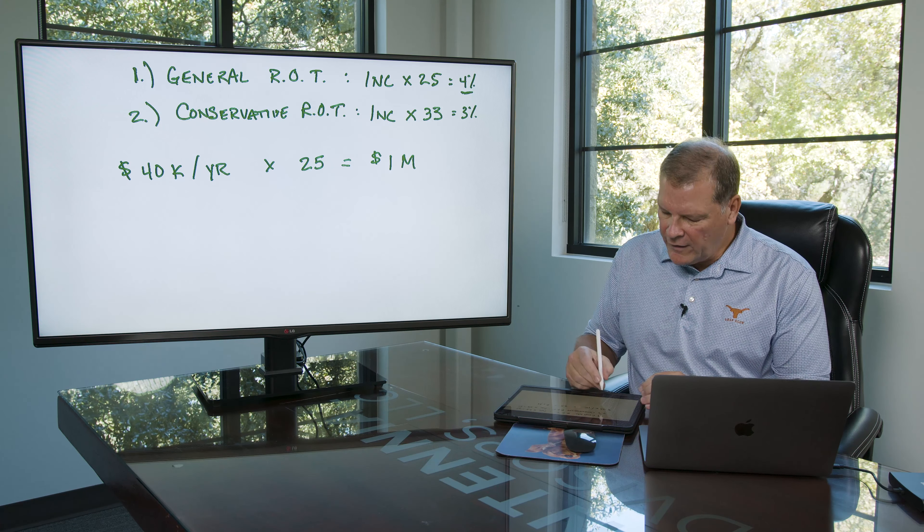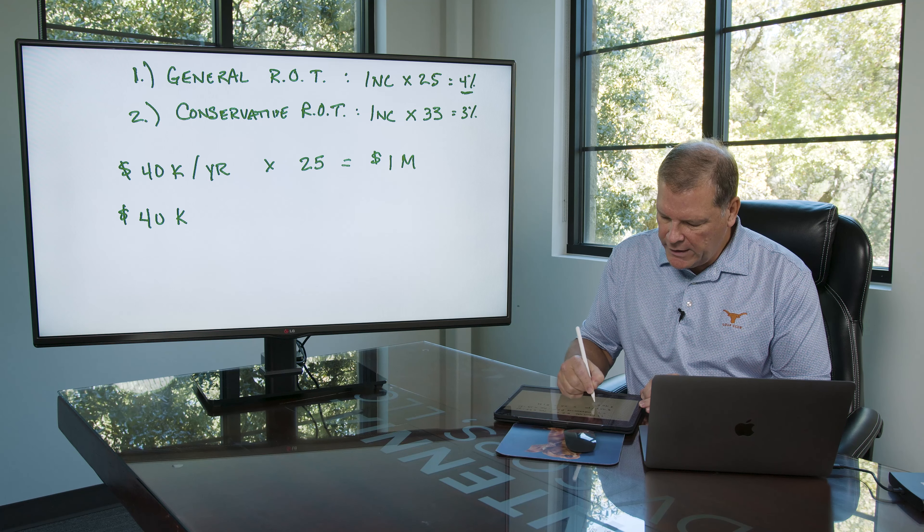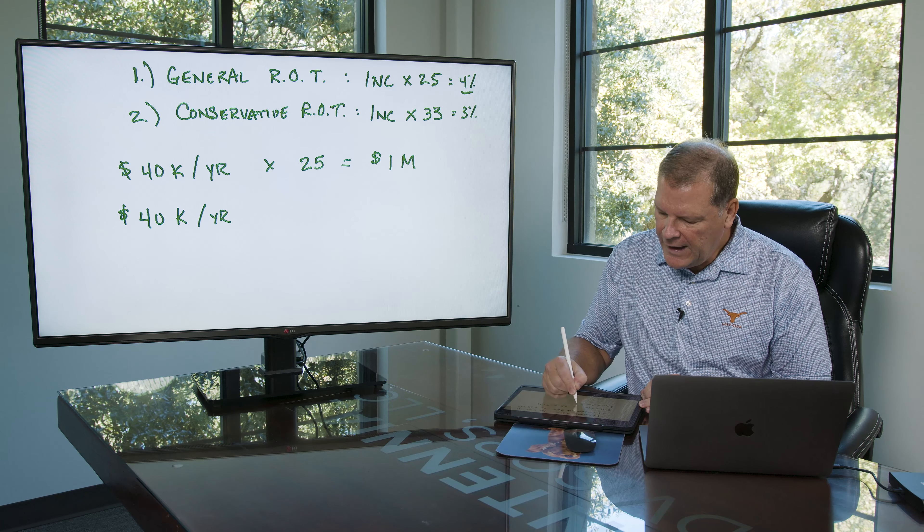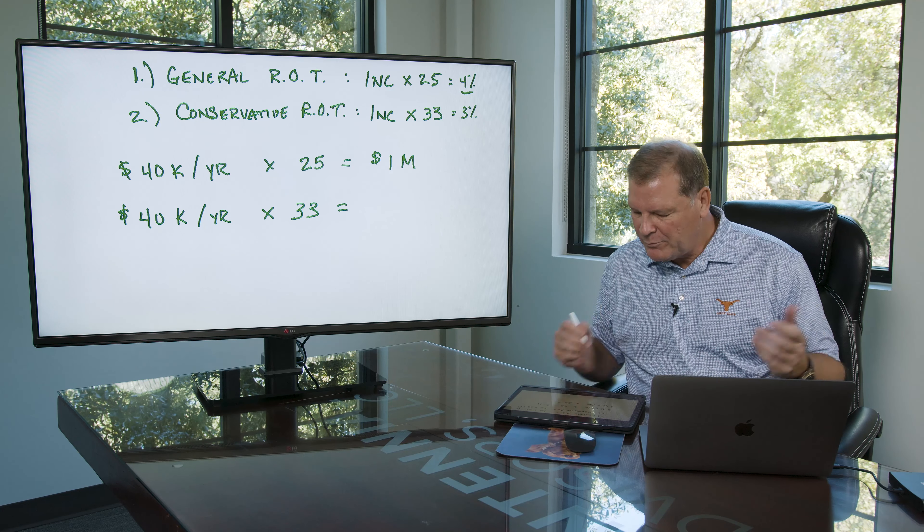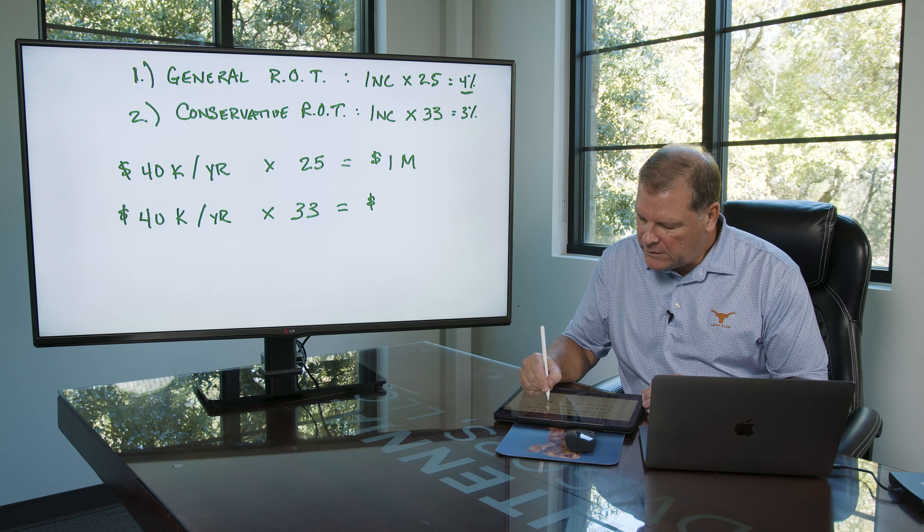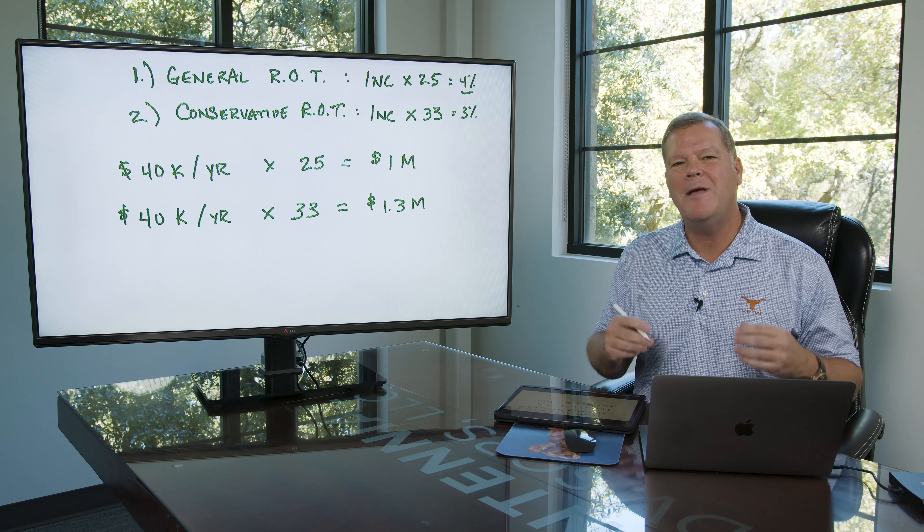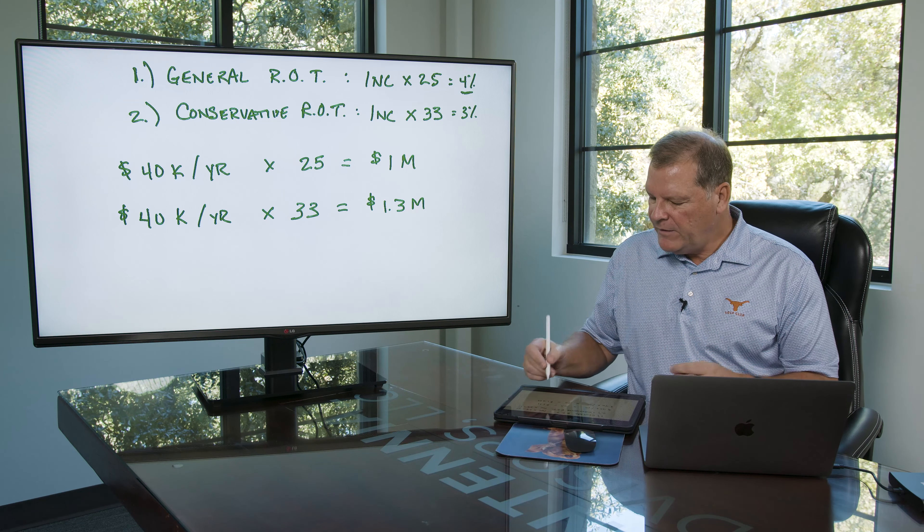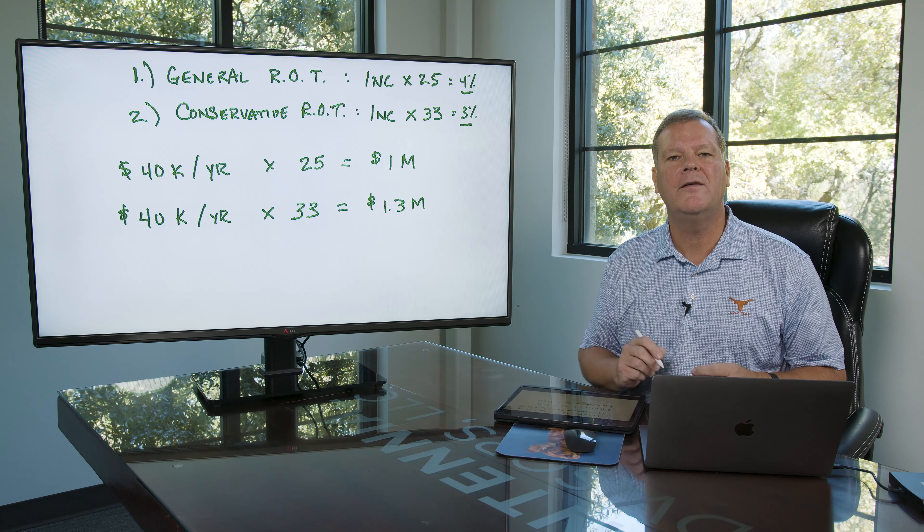Let's look at the conservative approach. $40K per year times 33. That's probably around $1.3 million, give or take, probably a smidge more than that.